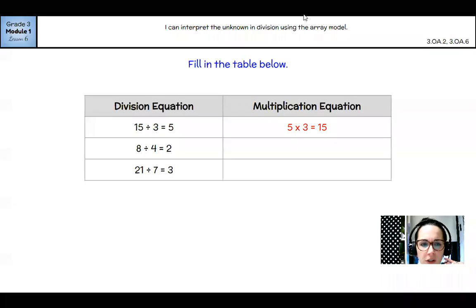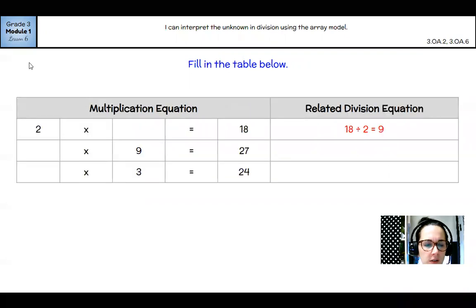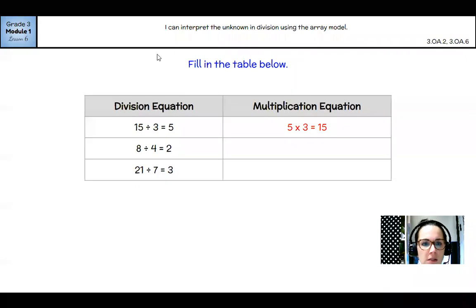So here we're looking at how division equations relate to multiplication equations. So I want to draw a picture to show you how 8 divided by 4 equals 2 is going to relate to the multiplication equation. So if I wanted to do 8 divided by 4 equals 2, I could make 4 groups: 1, 2, 3, 4. I have to fair share the rest until I get to 8: 5, 6, 7, 8.